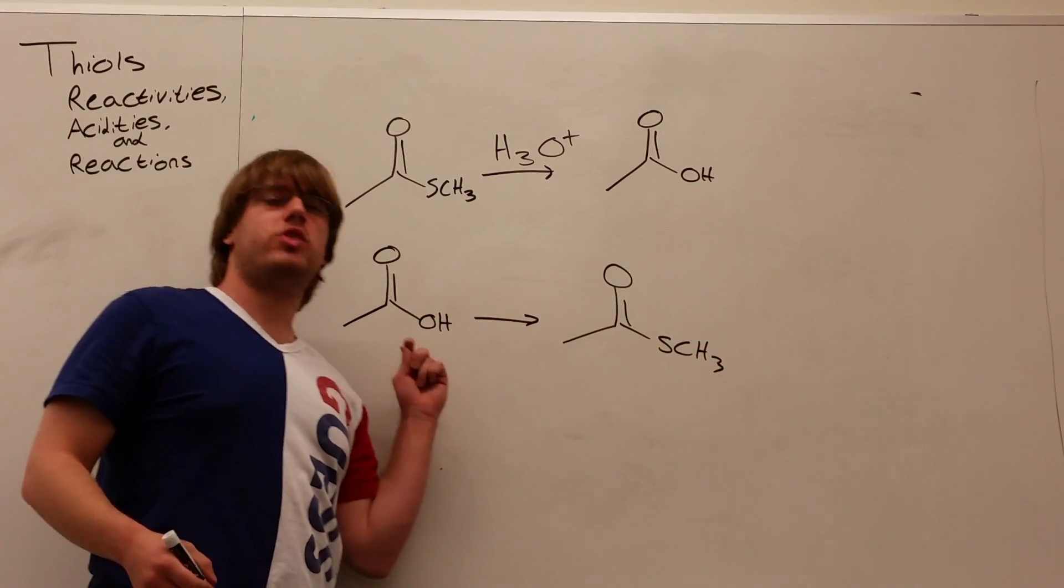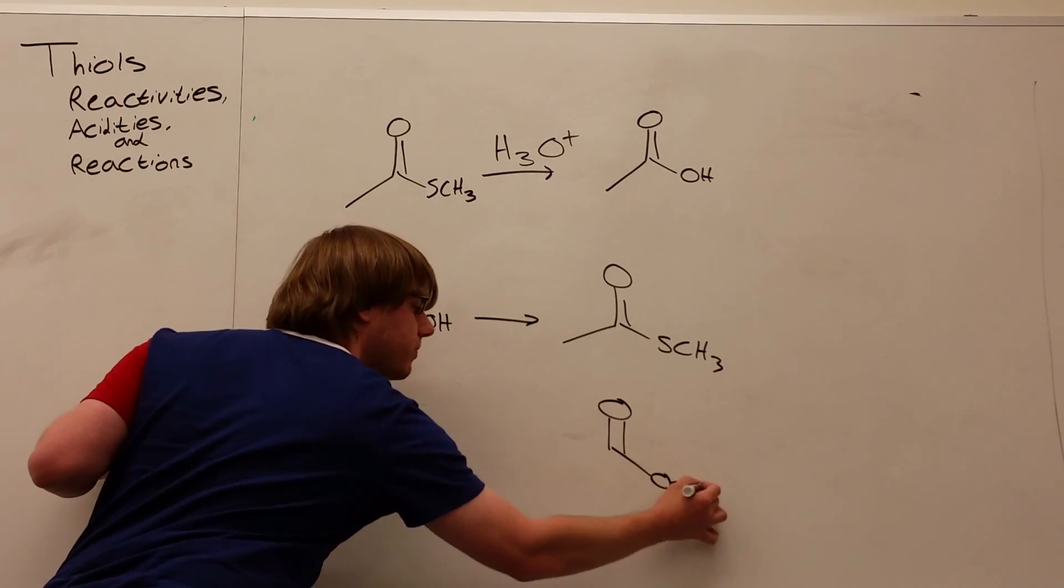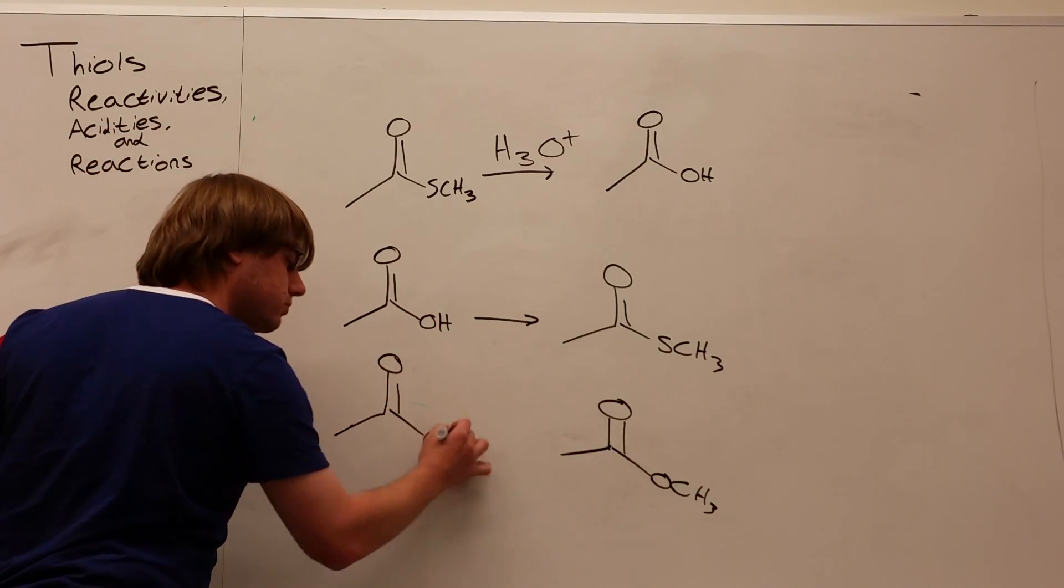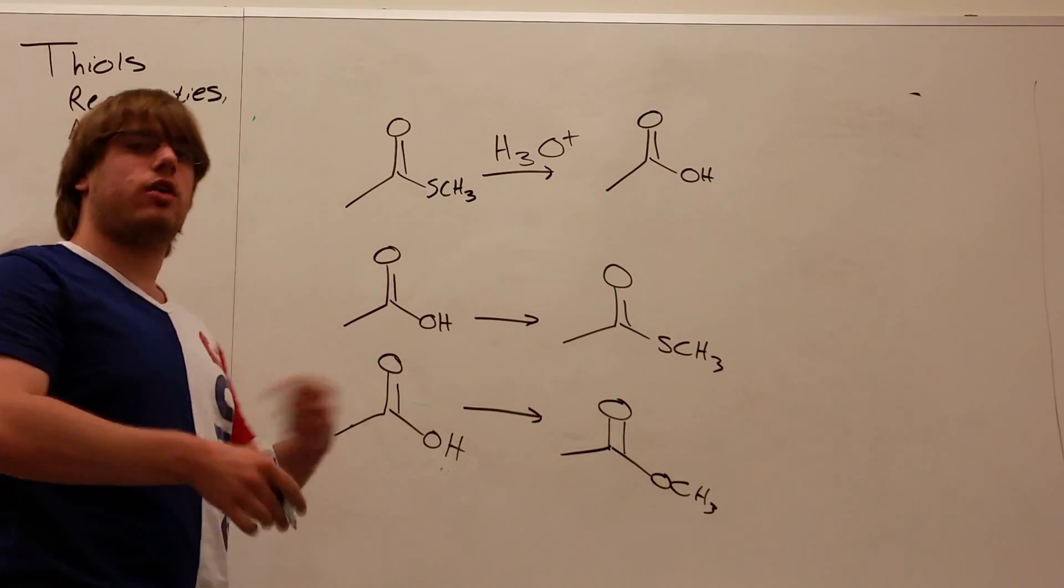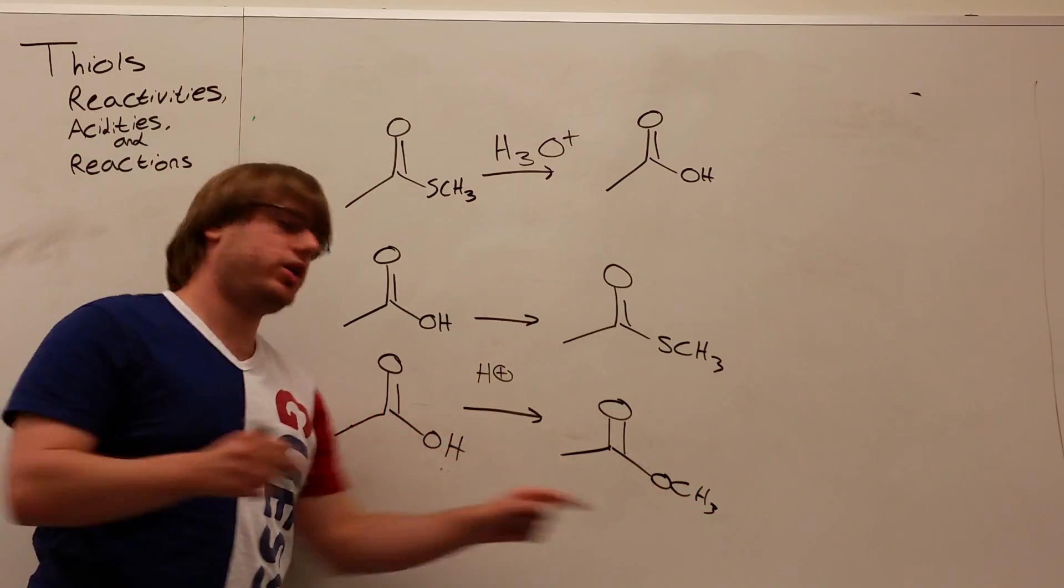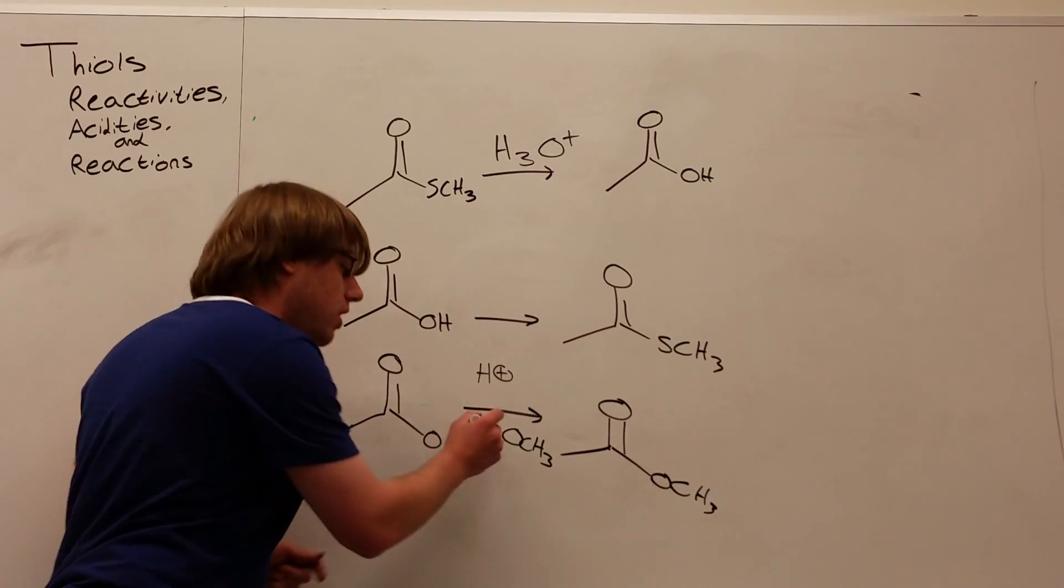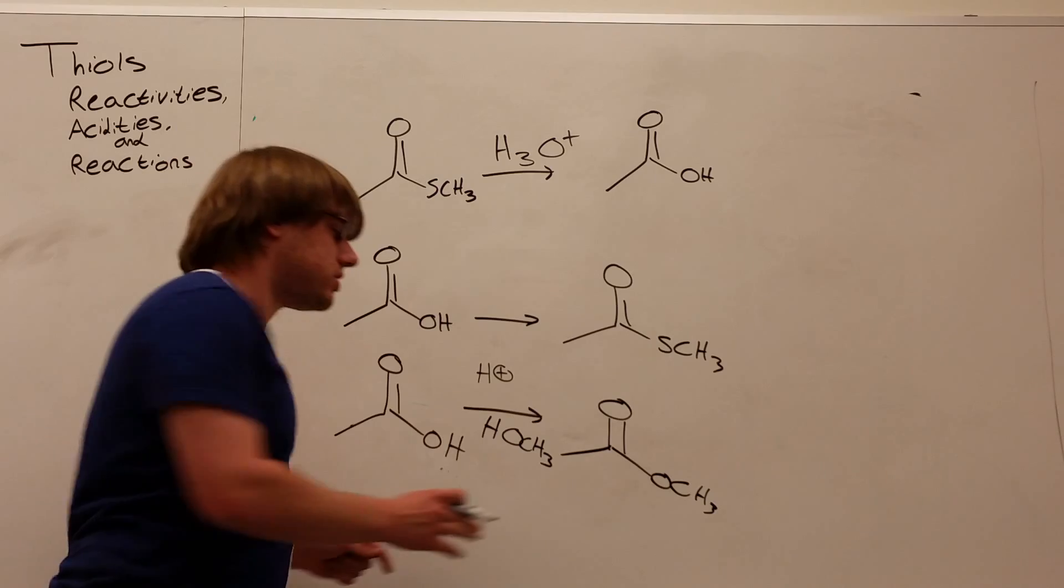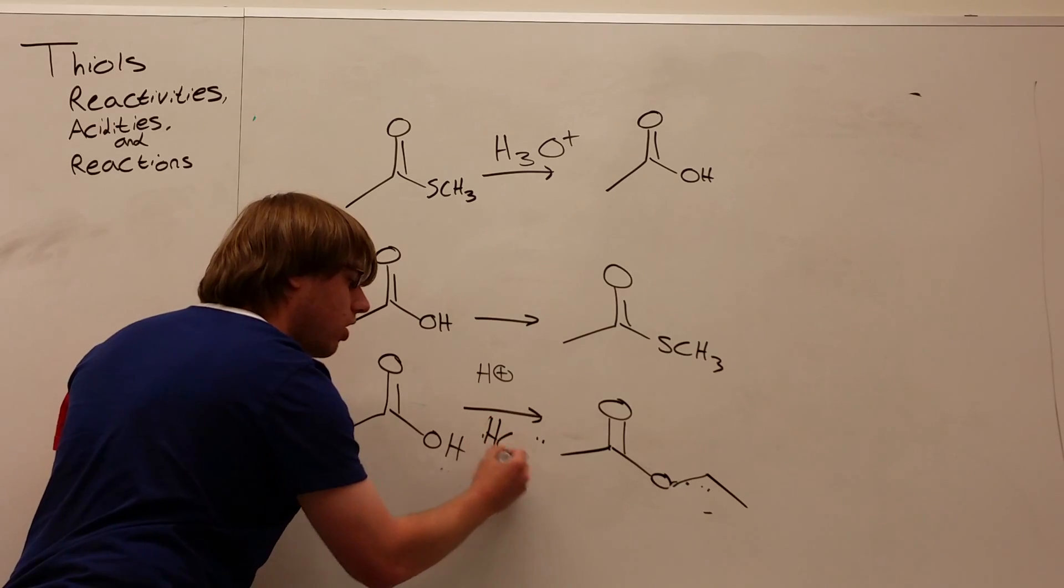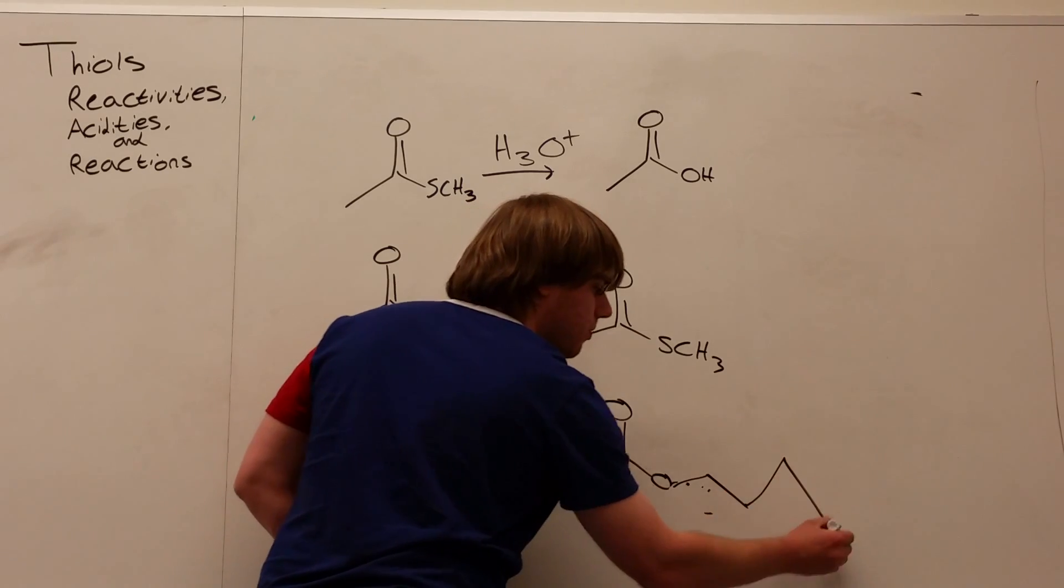Well, let's pause for a moment and compare a thioester to a regular ester, where we had carbonyl OCH3. What was our reaction that allowed us to convert a carboxylic acid into a regular ester? That was our Fischer esterification reaction that we learned in lecture, which was just H plus, and then whatever OR group we need, so in this case OCH3, and then we just put a hydrogen on that OCH3, so HOCH3. And if I wanted this to be Oethyl, well, then I would use, instead of HOCH3, I would use HOethyl.